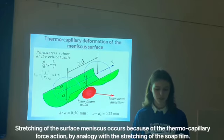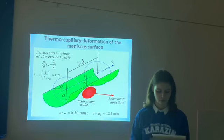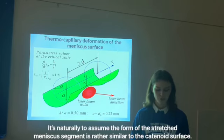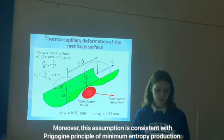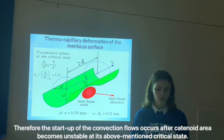Stretching of the surface meniscus occurs because of the thermo-capillary force action. By analogy with the stretching of the soap film, it's natural to assume the form of the stretched meniscus segment is rather similar to the catenoid surface. Moreover, this assumption is consistent with Prigogine's principle of minimized entropy production. Therefore, the start-up of the convection flows occurs after the catenoid area becomes unstable and at its above-mentioned critical state.